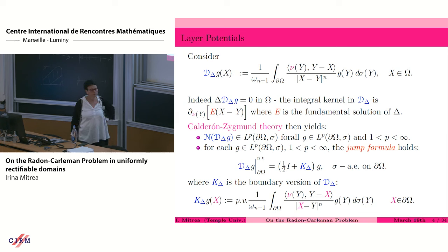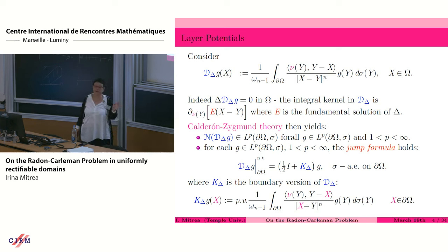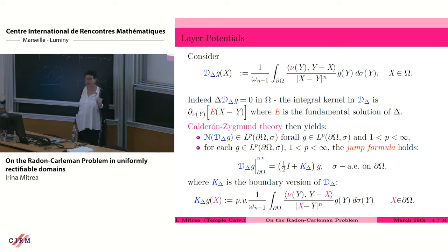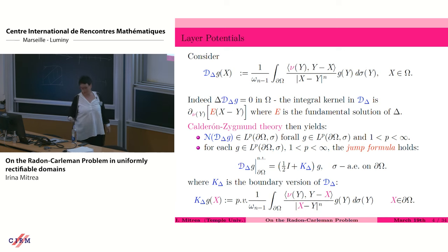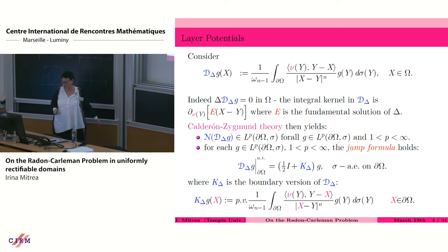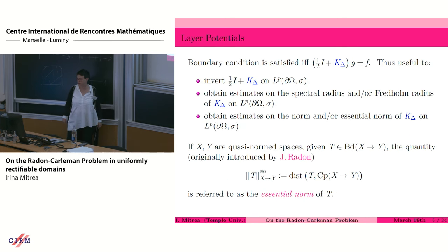A question was asked about the smoothness of the boundary at this point. I just said 'reasonable,' and I'm going to walk you through an increasingly complicated notion of what 'reasonable' is going to mean. For now I just want to set up the objects that are going to be important in the study.